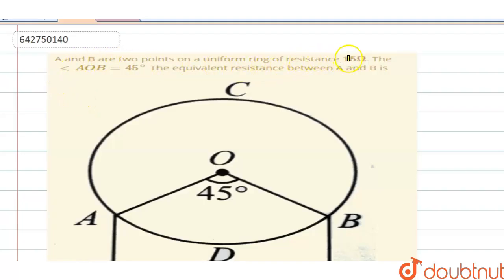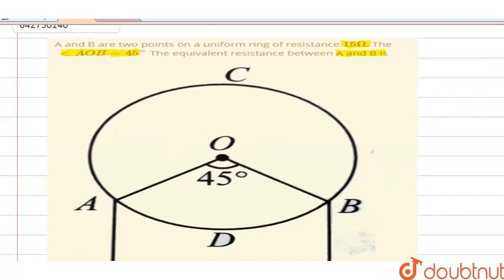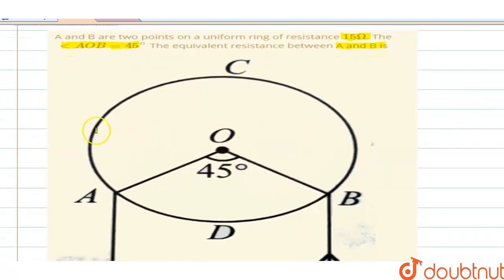on a uniform ring of resistance 15 ohms. The angle AOB is 45 degrees. Find the equivalent resistance between A and B. Here they have given you a diagram where you have a uniform ring, a wire ACBDA, which has a total resistance of 15 ohms.